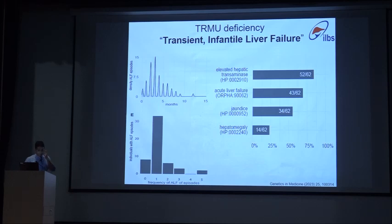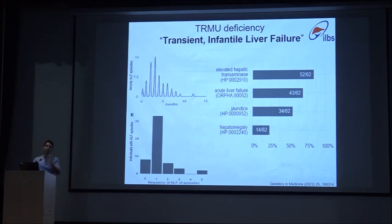The third important one is TRMU deficiency, an energy defect also known as transient infantile liver failure. This means the liver failure happens in infancy and resolves — patients will come out of it.